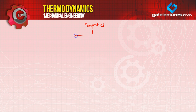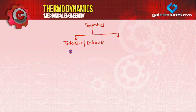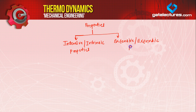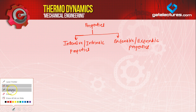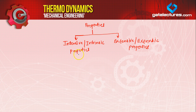Properties of the system, if we have to look at them, they are of two types. One is intensive or intrinsic properties, and the second one is extensive or extrinsic properties.